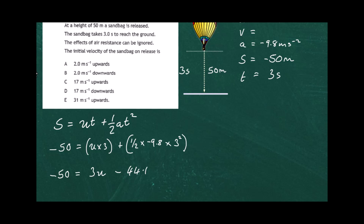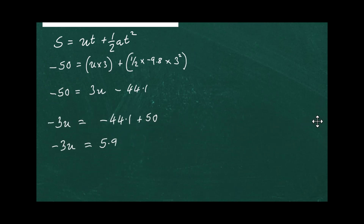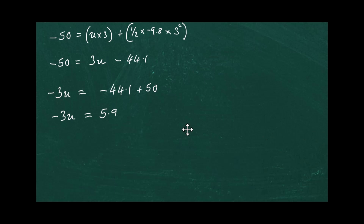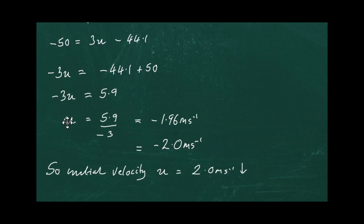Now we solve the equation. Taking the 3u over to the left-hand side gives minus 3u, and taking minus 50 to the right-hand side gives minus 3u equals minus 44.1 plus 50. Finally, minus 3u equals 5.9.